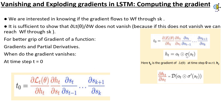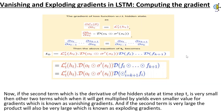Now, computing the gradient. We are interested in knowing if the gradient flows to WF through SK. It is sufficient to show that del LT(theta) by del W does not vanish, because if this does not vanish, we can reach WF through SK. When the gradient vanishes at time step t equals 0, t_0 is the gradient of LT(theta) at time step 0 with respect to ht. The gradient of the loss function with respect to hidden states, del LT(theta) by del ht, is equal to LT'(ht). The above equation for t_0 can be seen on the screen.